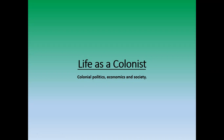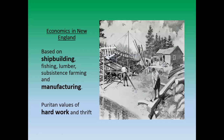Today we're looking at the life of the colonists in the 13 British colonies — the politics and the economics, the society, the basic breakdown. So to begin, what is the economic situation in New England? Primarily, it's based off of shipbuilding, fishing, lumber, and subsistence farming — meaning they farm enough for themselves and not really much else.